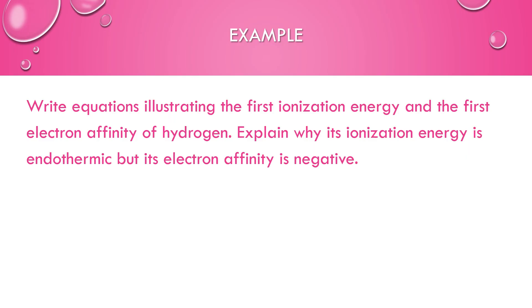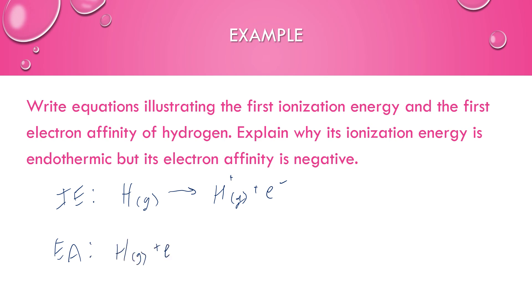For this example question, we need to write equations illustrating the first ionization energy and first electron affinity of hydrogen. We're dealing with gases for both, because that's part of the definition for ionization energy and electron affinity. For ionization energy — losing an electron — we're left with a positive hydrogen ion and a free electron. Electron affinity is effectively the reverse: starting with the neutral gas, we gain an electron to form a negative hydrogen ion. Ionization is endothermic — it requires energy to break the bond between the hydrogen and its electron — whereas electron affinity is exothermic, because you are forming a new bond between the hydrogen and an extra electron.